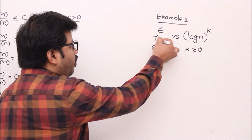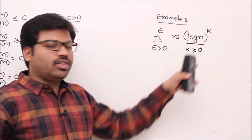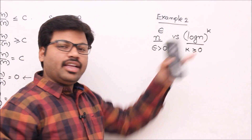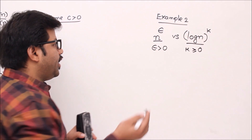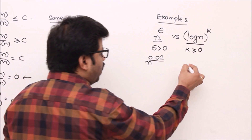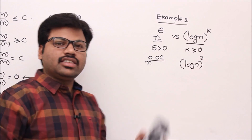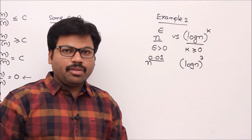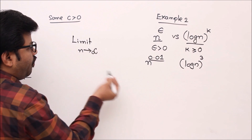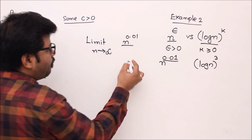Now let's look at a second example: n^ε versus (log n)^k, where ε > 0 and k ≥ 0. For instance, n^0.01 versus (log n)³ — a very small polynomial power compared to a large power of log n. As usual, we apply the limit: f(n)/g(n) = n^0.01 / (log n)³.